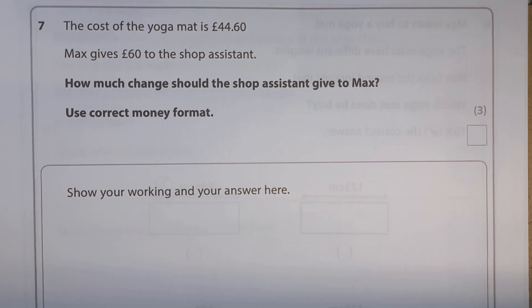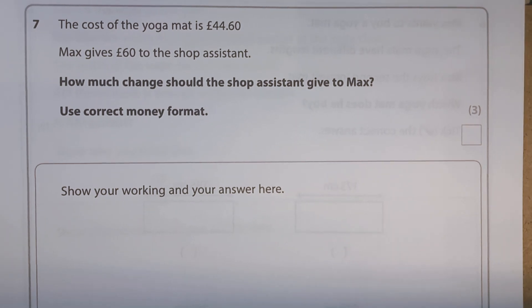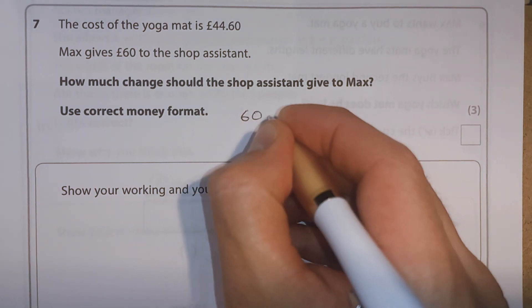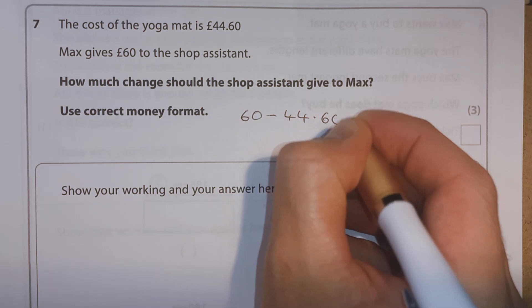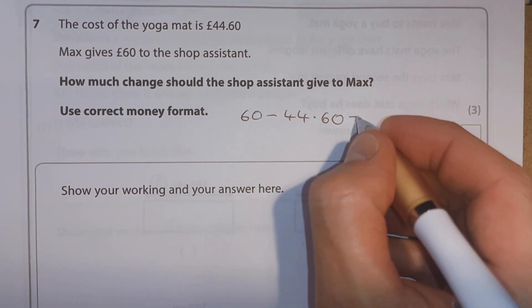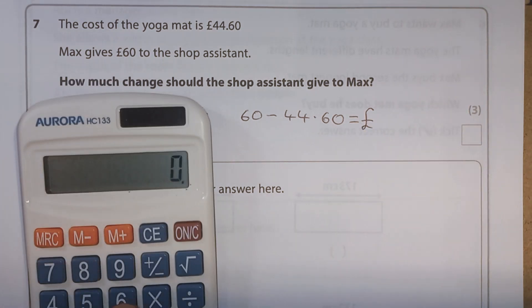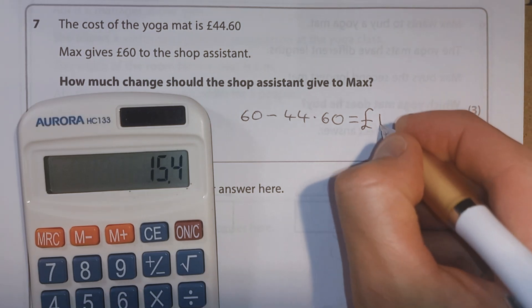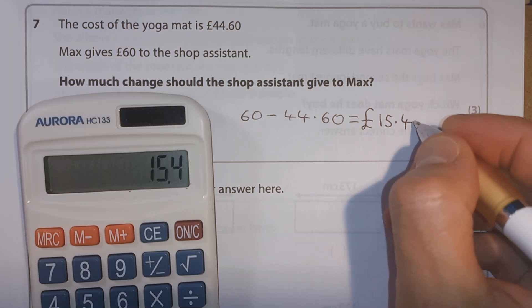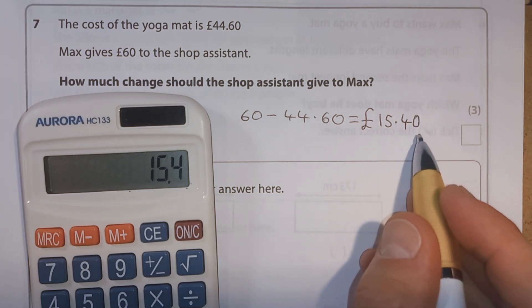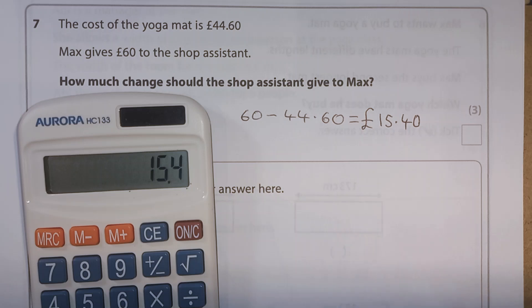Question 7. The cost of the yoga mat is £44.60. Max gives £60 to the shop assistant. How much change should the shop assistant give to Max? Use correct money format. Well, he's given £60. And they're going to keep £44.60 or take away £44.60. So we're going to be left with, and it's going to be money, so we've got a pound sign there. So 60 minus £44.60. And we get 15.4.